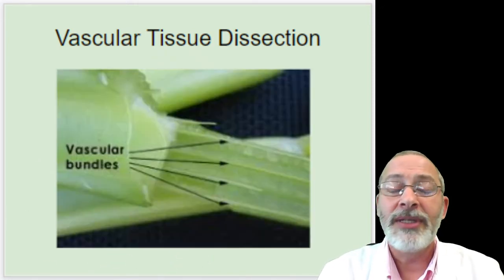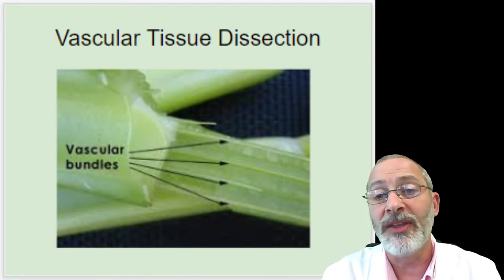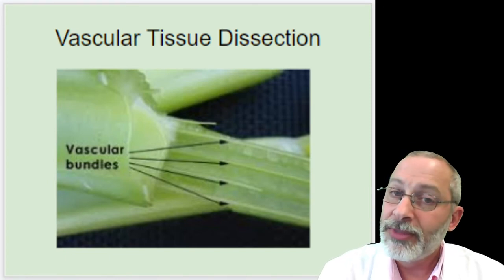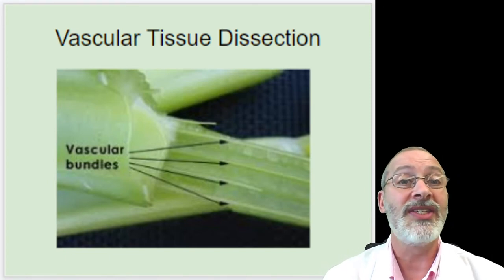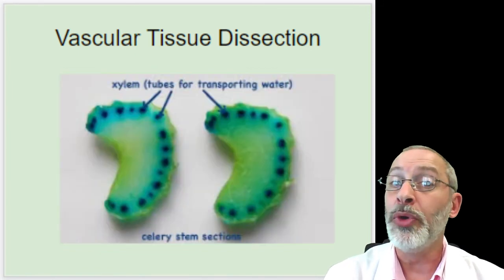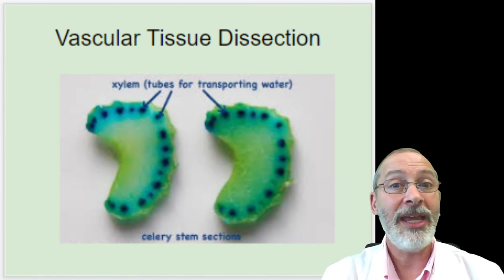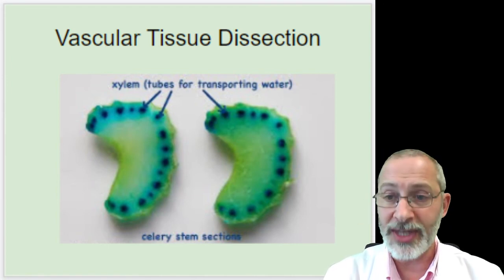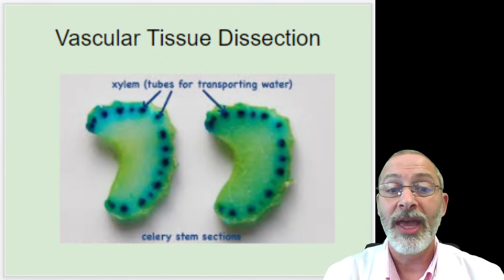So unlike taking a normal celery stalk and breaking it in half and seeing little strands of green strings, coloring them enables you to see exactly where the water is being moved or transported through the stem. Keep that in mind, along with other characteristics of stems, as you continue through this activity.